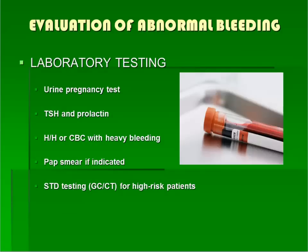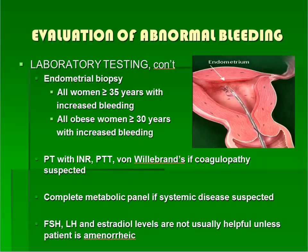Laboratory testing is usually indicated in patients with abnormal uterine bleeding. The very first test should be a pregnancy test, because this is a common cause of abnormal bleeding that you do not want to miss. Other labs should include a TSH to rule out thyroid disease, and a prolactin level to rule out hyperprolactinemia. If the patient is bleeding heavily, check a CBC with platelets. A pap smear is indicated if the patient is at least 21 years old and has not had a recent normal pap. STD testing is indicated for high-risk patients, including all women younger than 25 years of age. This slide lists laboratory tests and tissue sampling that might be indicated depending on the patient's age and history.